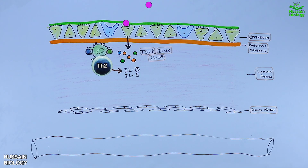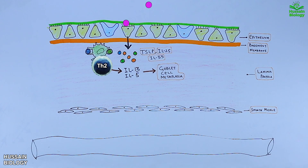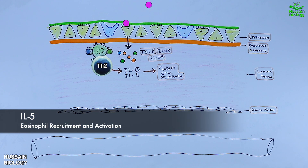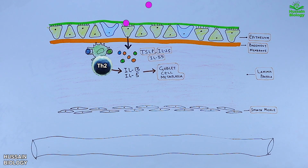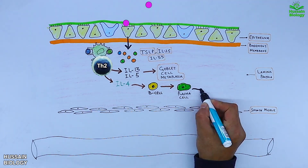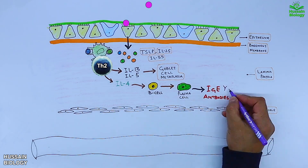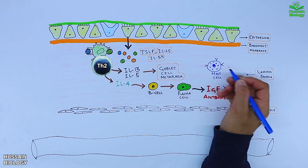We now have activated Th2 cells. Upon activation, these T helper cells release IL-13, IL-5, and IL-9. IL-13 drives goblet cell metaplasia, IL-5 drives eosinophil recruitment and activation, and IL-9 drives mast cell hyperplasia. Furthermore, Th2 cells also release IL-4, which acts on B cells and converts them into plasma cells that secrete IgE antibodies.